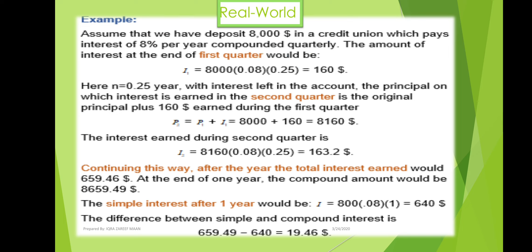The interest rate is 8%, which is 0.08. Multiplying the three terms — principal, rate, and time — we get $160 for the first quarter. To calculate the second quarter, we take the original principal of eight thousand dollars and add the interest already earned, which is $160, giving a new principal of $8,160.